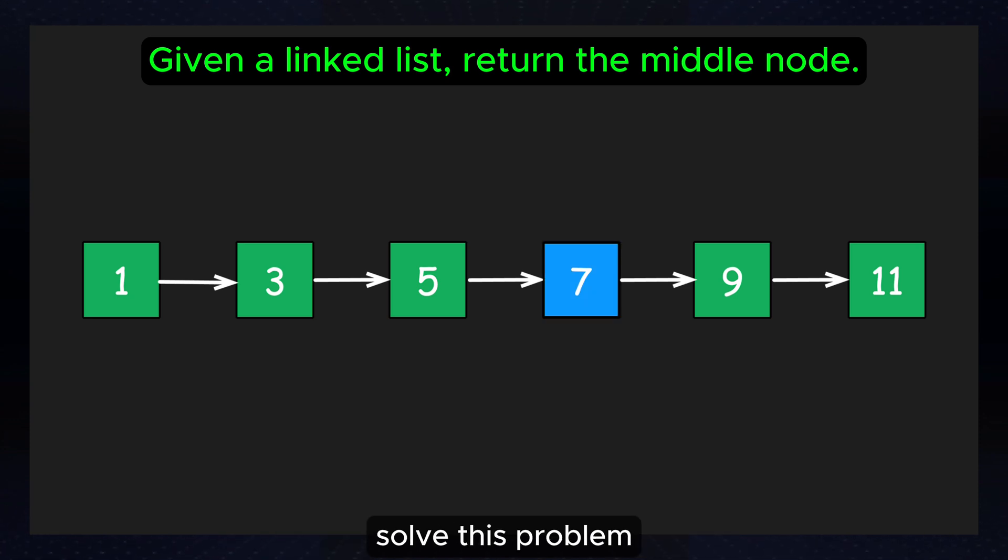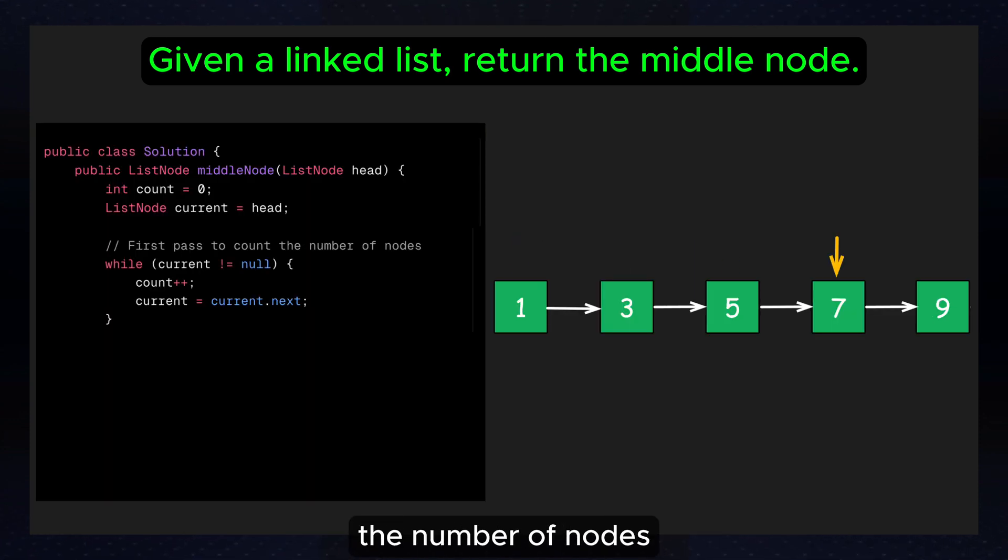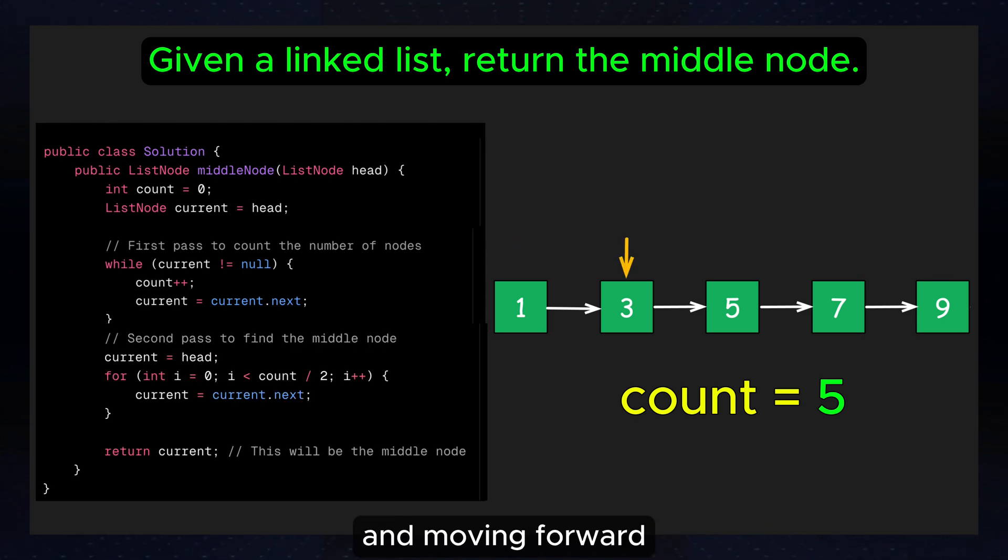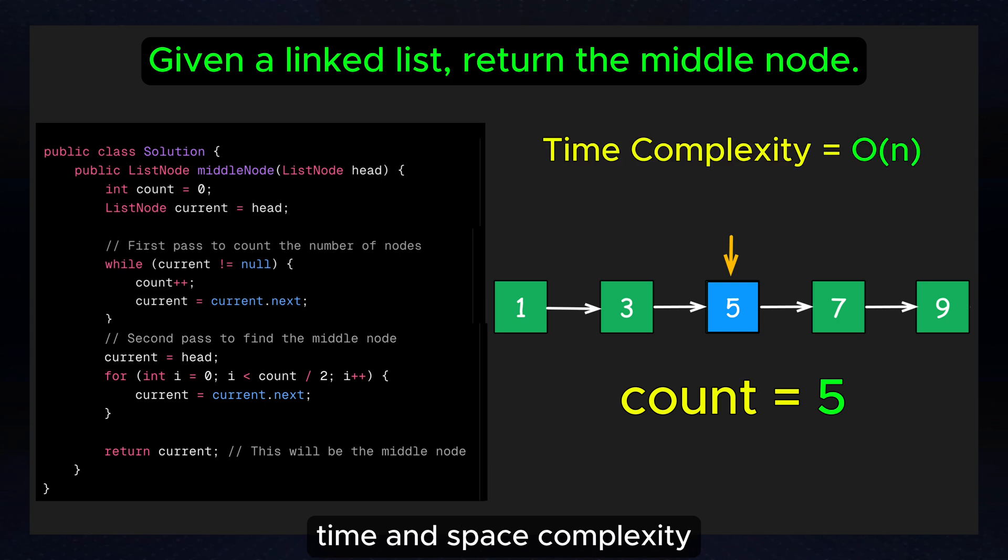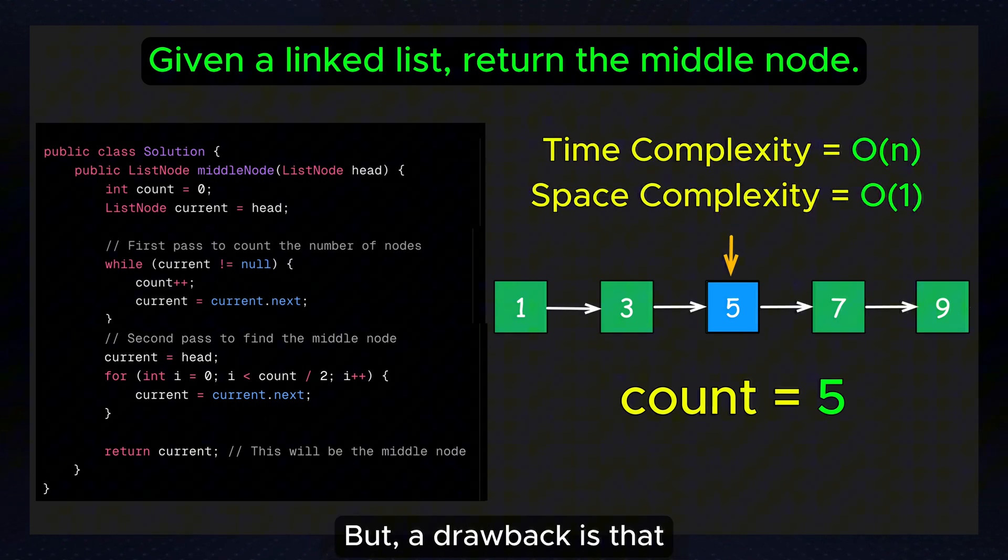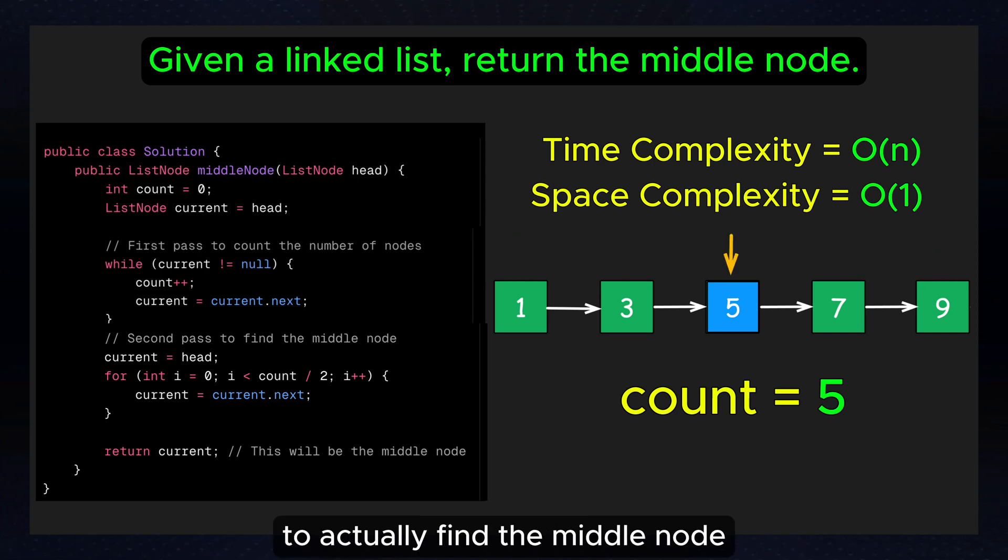One simple way to solve this problem is by counting the number of nodes in the linked list. Then starting at the beginning and moving forward by half the total number of nodes. This approach works and it's efficient in terms of time and space complexity. But a drawback is that you need to traverse the linked list twice, first to count the nodes and second to actually find the middle node.